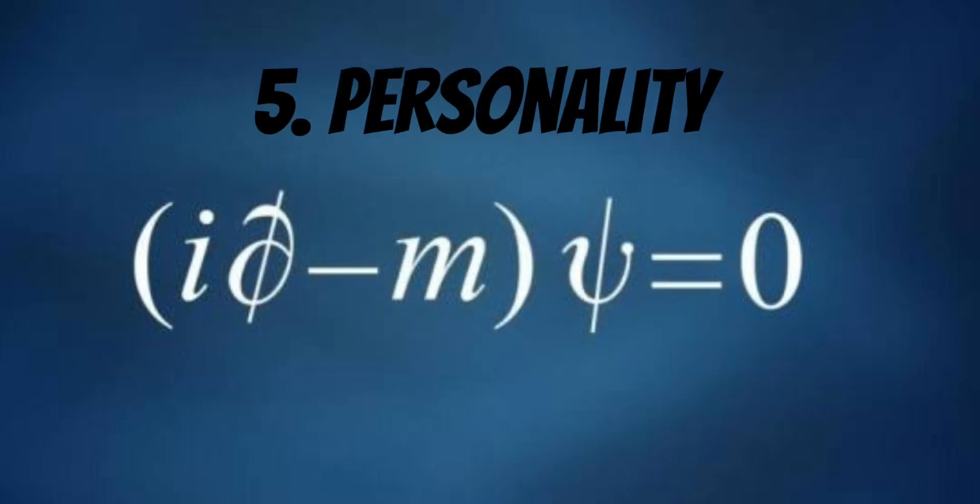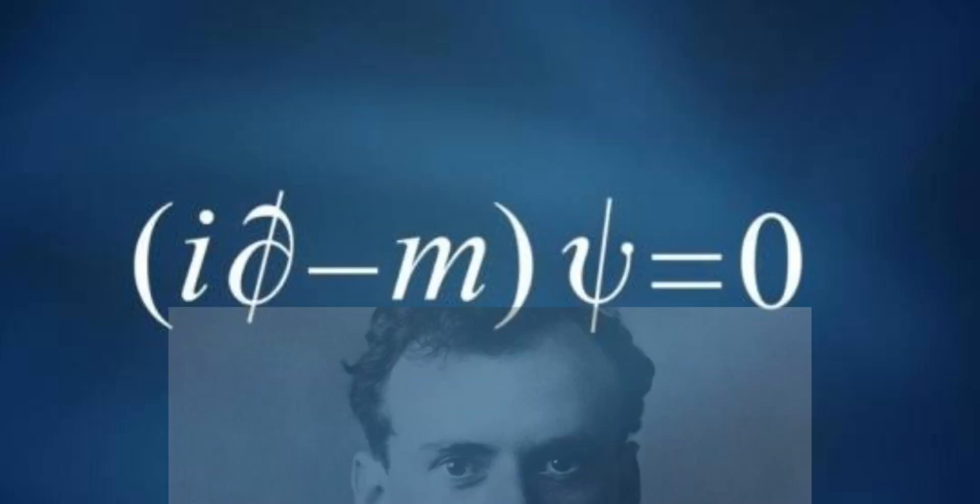Number 5: Personality. Dirac was known for his unique personality traits. He was famously reserved, even by the standards of his time, often expressing himself in a very concise and precise manner.